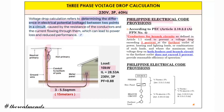The PEC provision states that conductors for branch circuits shall be sized to prevent a voltage drop exceeding 3 percent at the power outlet for heating, lighting loads, or combinations thereof, where the maximum total voltage drop on both feeders and branch circuits to the power outlet does not exceed 5 percent. So from the source to the distribution panel, the allowable voltage drop is 2 to 3 percent.